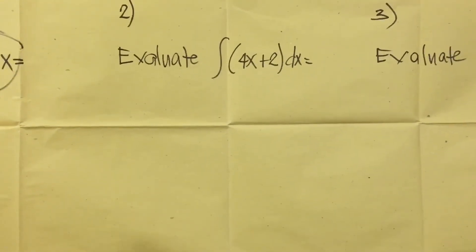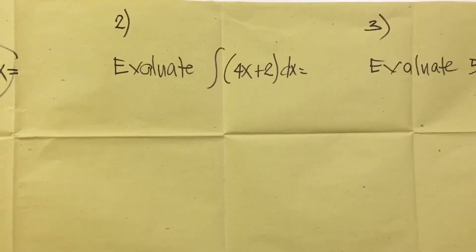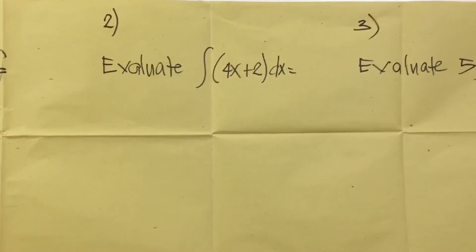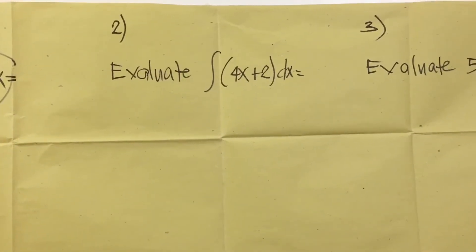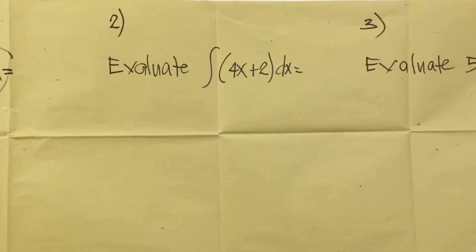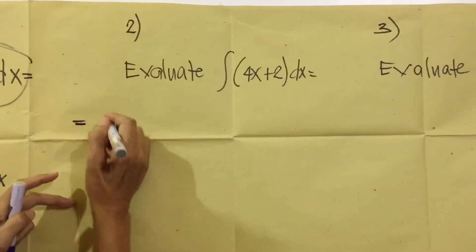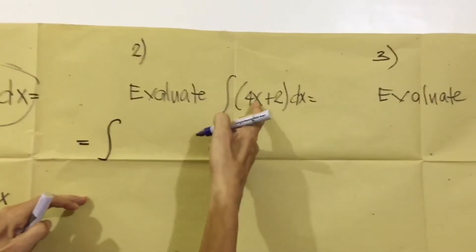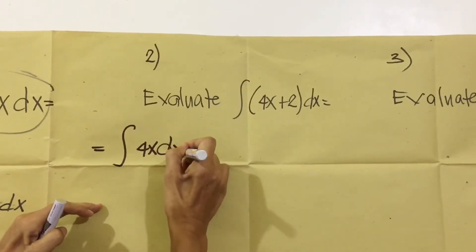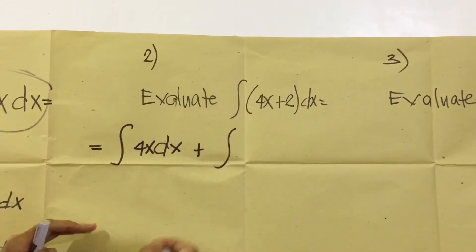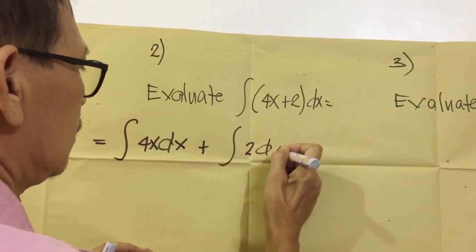Answer or evaluate number two example. The given is integral of the sum of 4X plus 2 dx. First, analyze which formula to use. This is formula number two. We are going to distribute. Equals integral first, multiply 4X, multiply the X. Then plus, integral sign, times 2, times DX.